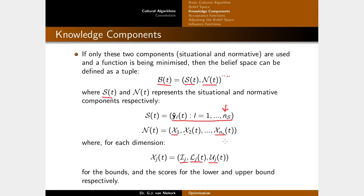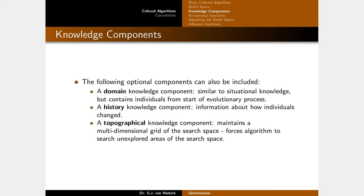Apart from situational and normative knowledge, other components can also be included: a domain knowledge component similar to situational knowledge that stores the best individual found — like a hall-of-fame concept; a history knowledge component that stores how individuals change across dimensions (the magnitude and direction of change and its effect on fitness); and topographical knowledge, which maintains a multi-dimensional grid of the search space and forces the algorithm to search unexplored areas.